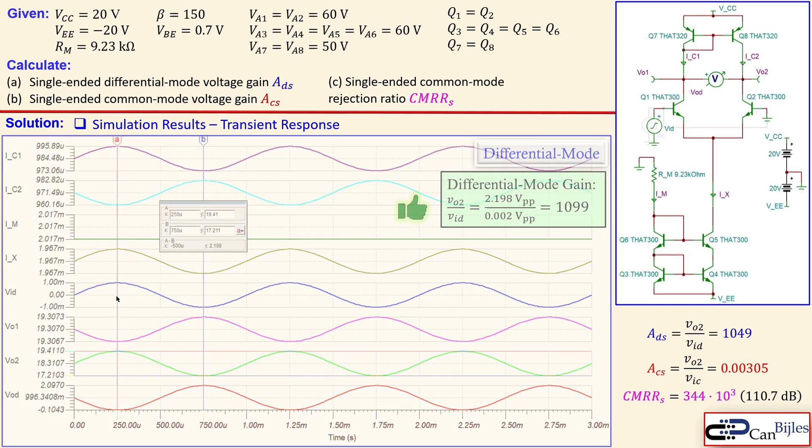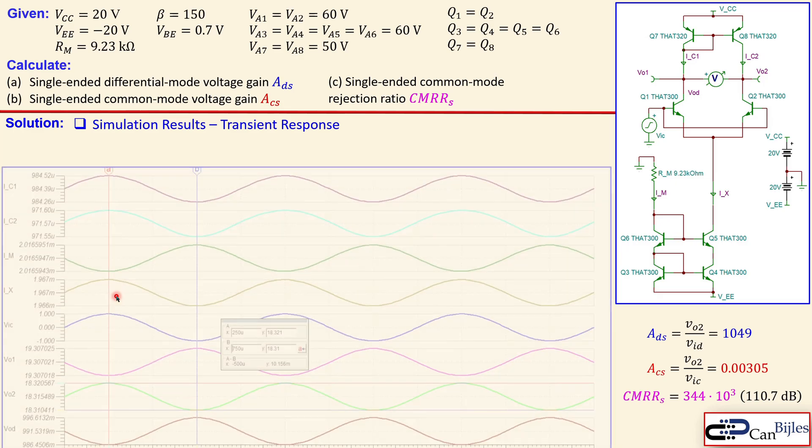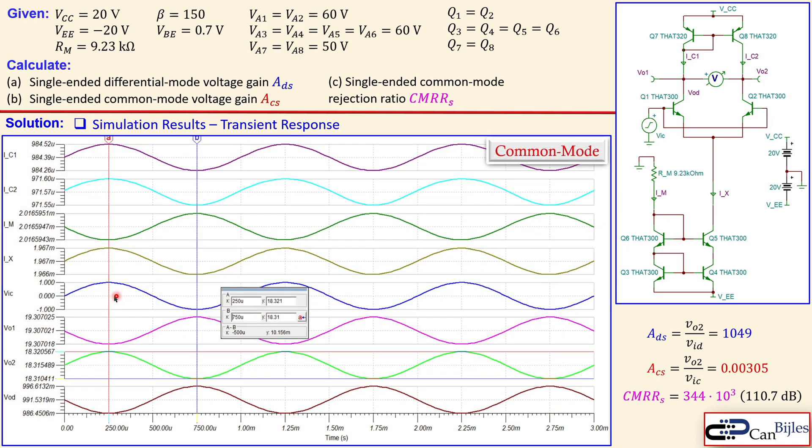Moving on to the transient response for the common mode operation. Again the blue one is our input and light green is our VO2. And this is the common mode gain. You see here the peak to peak for this one. It's also shown here is 10.156 millivolts.